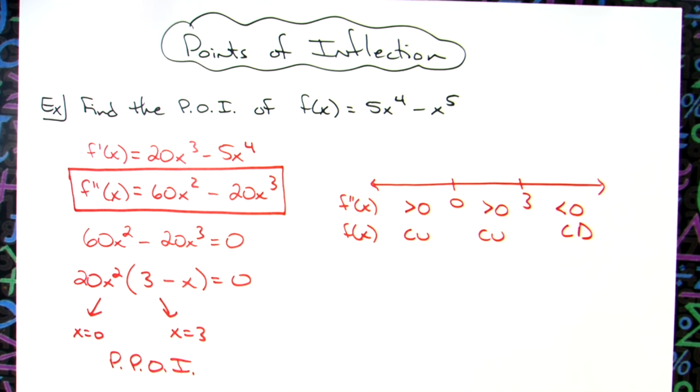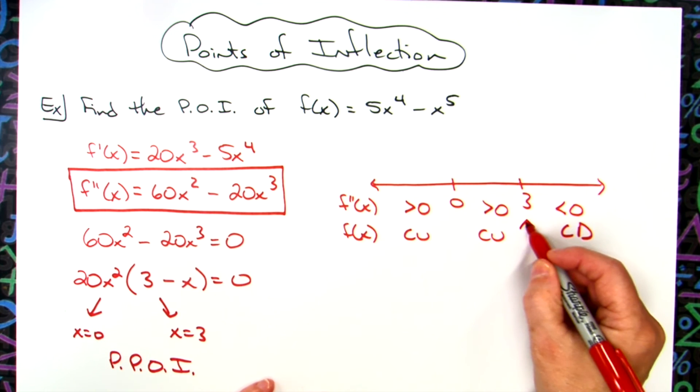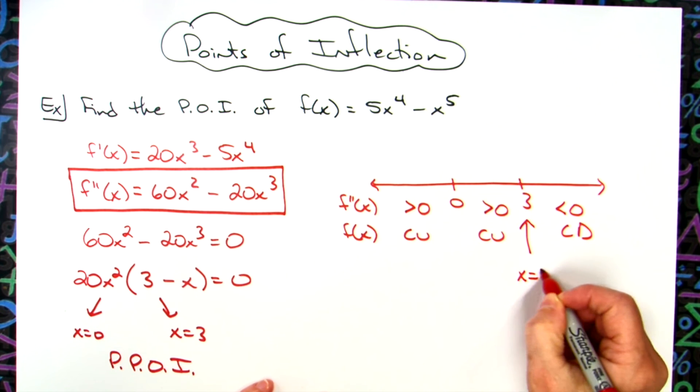Now we know that we have points of inflection whenever our concavity changes. So right here it changes from concave up to concave down, so right there at x equals three is a point of inflection.